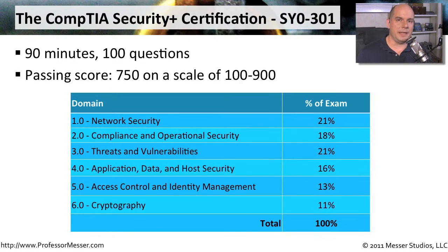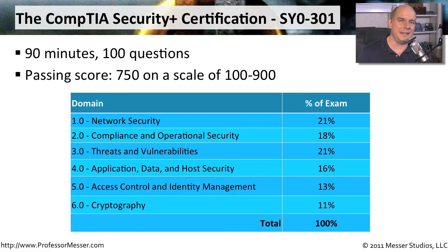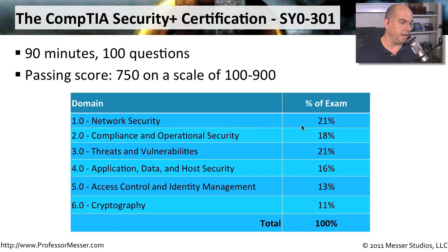The Security Plus exam is 100 questions that you have to take in 90 minutes, so you have to think carefully about how much time you spend on each question. The passing score is 750, and you're graded on a scale of 100 to 900 — this is not a percentage because every question has a different weighting. There are six domains: domain one is network security at 21% of your exam; domain two is compliance and operational security; then threats and vulnerabilities; application, data, and host security; access control; and identity management and cryptography.